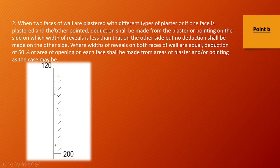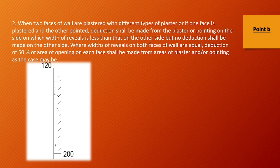If the two sides of the wall are plastered with different types of plaster — one side plastered and the other side pointed — then reduction shall be made for 50% of the area of each opening. For example, a 2-sided wall where one side is plastered and the other is pointed: if you have 120mm plastered and 80mm pointed, you have to do the deduction of 50% on each side.